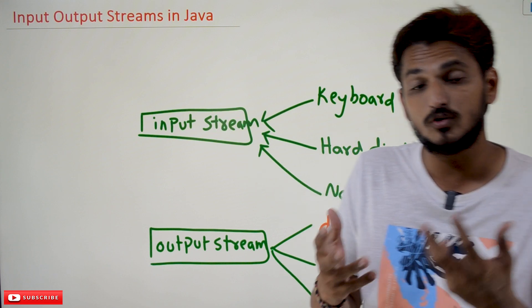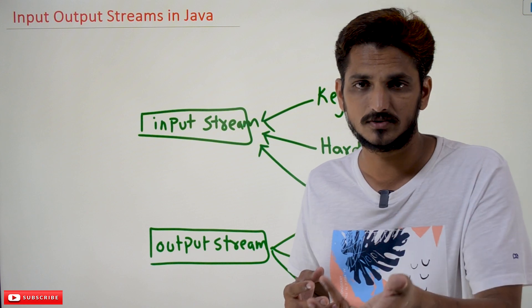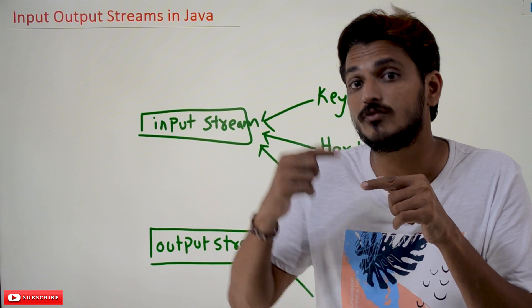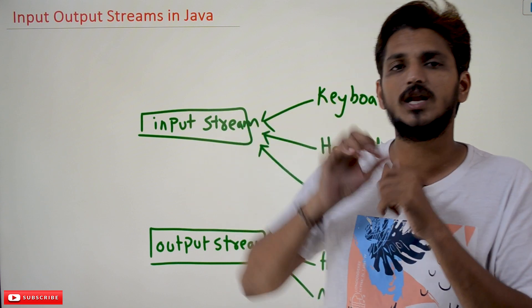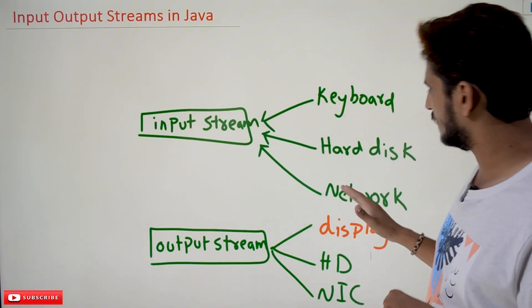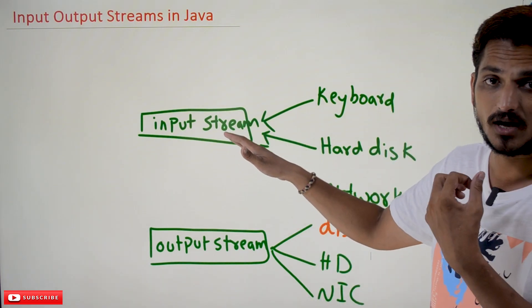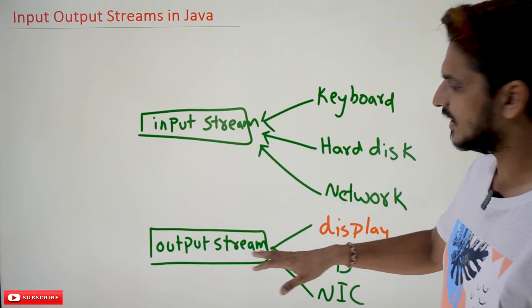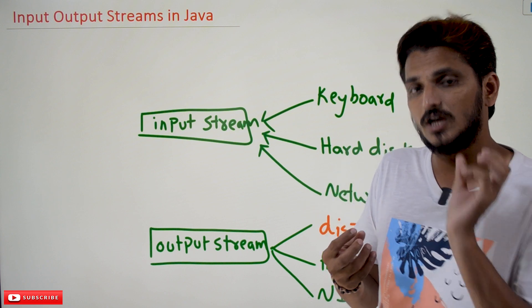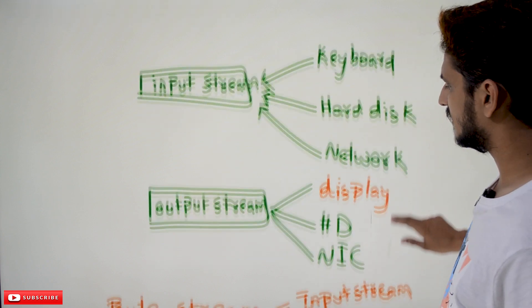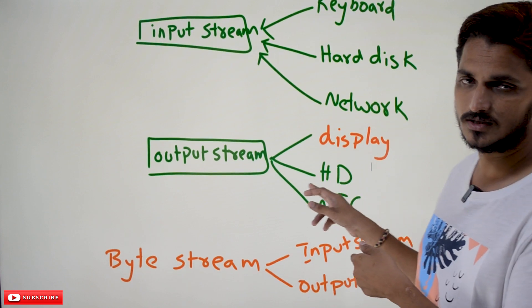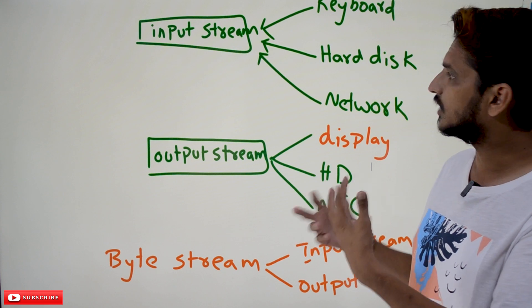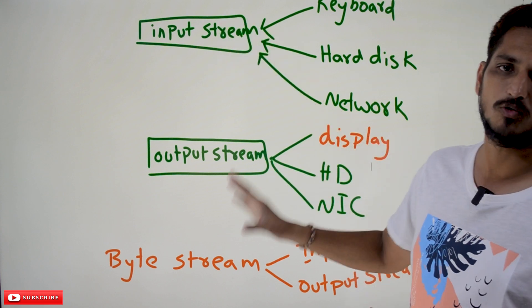Similarly, sometimes we are going to write applications related to networks. Computer networks means we need to connect with the network interface card, from where we are going to read the data. So from the network also, we are going to get the input data for our application. Similarly, the data present in our code will be sent to the display; we can send the data to copy it onto the hard disk, or send it to the networks. We need to connect both ways — that is what input stream and output stream means.